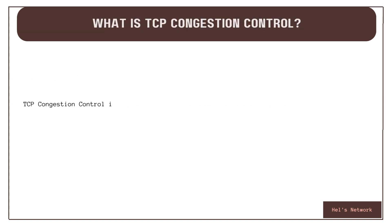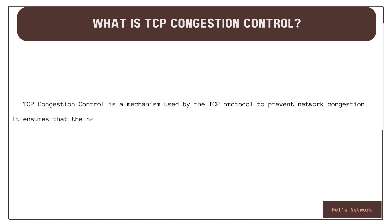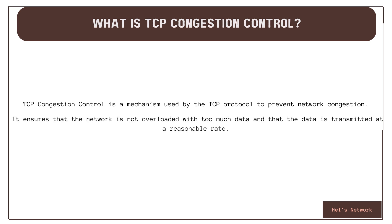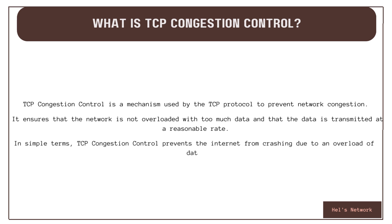TCP congestion control is a mechanism used by the TCP protocol to prevent network congestion. It ensures that the network is not overloaded with too much data and that the data is transmitted at a reasonable rate. In simple terms, TCP congestion control prevents the internet from crashing due to an overload of data.